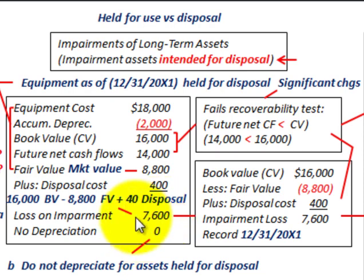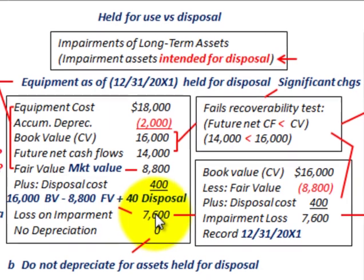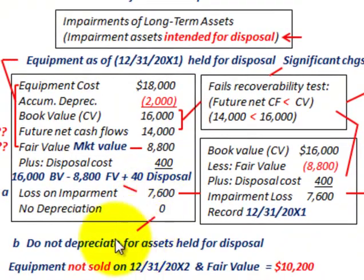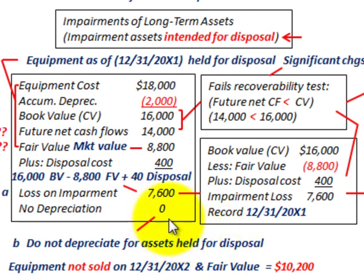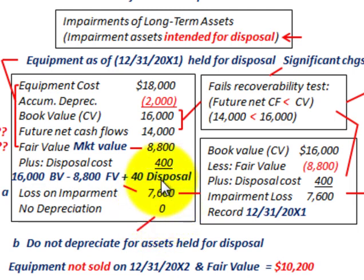Normally we would recalculate depreciation, but in the case where assets are held for disposal — meaning we intend to dispose of them in the future — we would not have any depreciation. So we would have no depreciation on this asset that's being held for disposal.